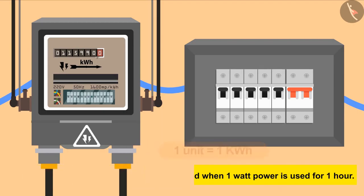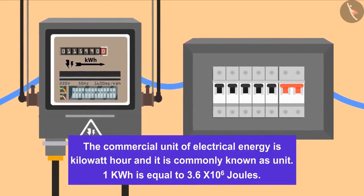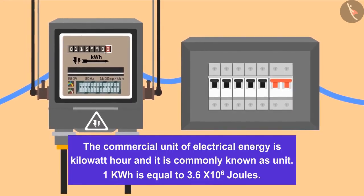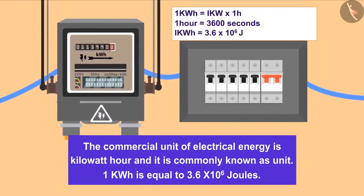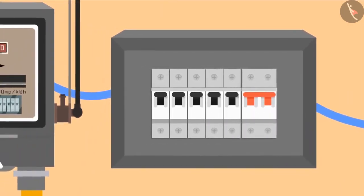The commercial unit of electrical energy is kilowatt hour and it is commonly known as unit. One kilowatt hour is equal to 3.6 × 10⁶ joules. After this video, I hope you have understood the power supply of your homes better.